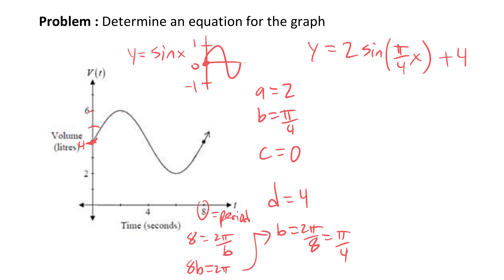I would technically lose marks for that, because if you look at the graph, the x-axis is actually labeled t, and the y-axis is actually v of t. So for full marks I would have to write v of t equals 2 sine (pi over 4) t plus 4 — sticking with the variables given in the graph. Otherwise, the a, b, c, and d values are good to go.